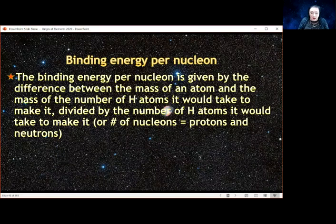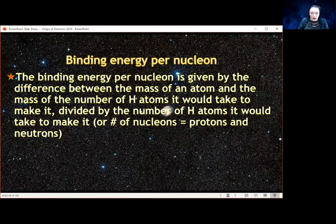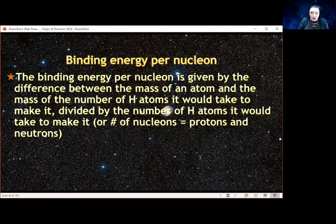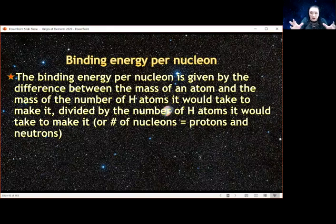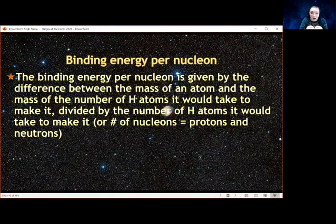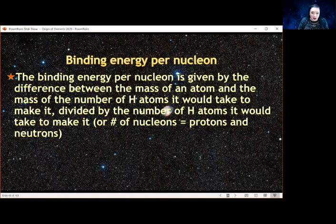The binding energy per nucleon is how much energy or mass is missing compared to the number of hydrogen atoms it would take to make it. With helium, we take four hydrogen atoms, and the mass of the helium is less than the mass of four hydrogens. That missing mass is what is considered to be the binding energy. That's the energy that was lost in putting it together, that's what's sent out into space and becomes the energy source for stars. That means you're going to have to give it back that much energy to break it apart. The binding energy is the amount of energy holding those protons and neutrons together.